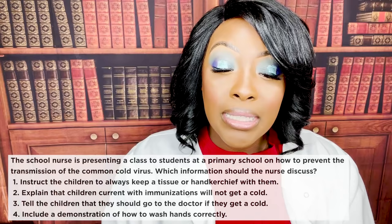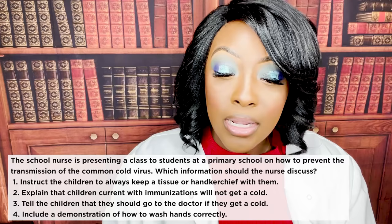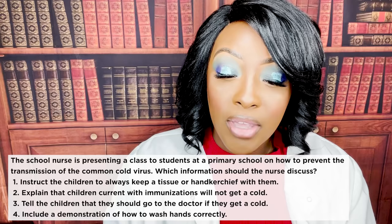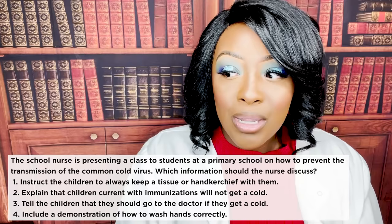Second question: the school nurse is presenting a class to students at a primary school on how to prevent the transmission of the common cold virus. Which information should the nurse discuss? One — instruct children to always keep a tissue or handkerchief with them. Two — explain that children with current immunizations will not get a cold. Three — tell the children to go to the doctor if they get a cold. Or four — include a demonstration of how to wash hands correctly. The answer is four.